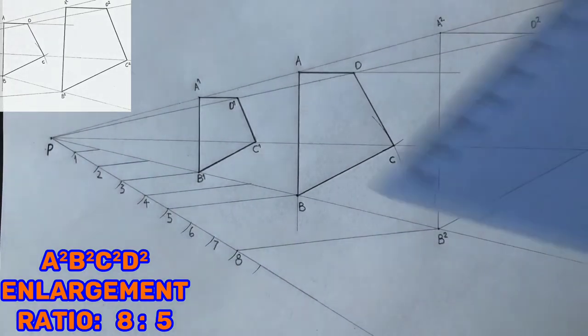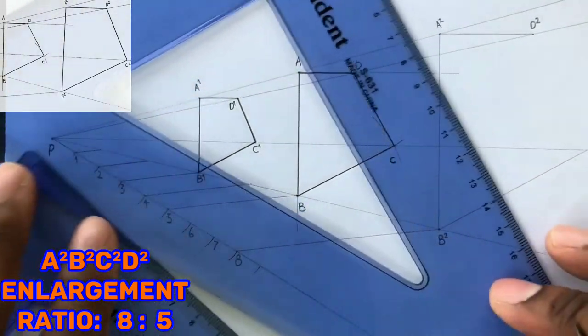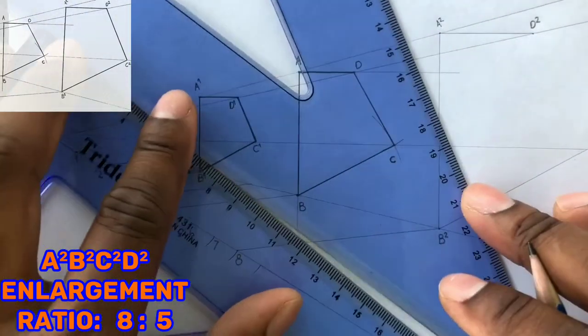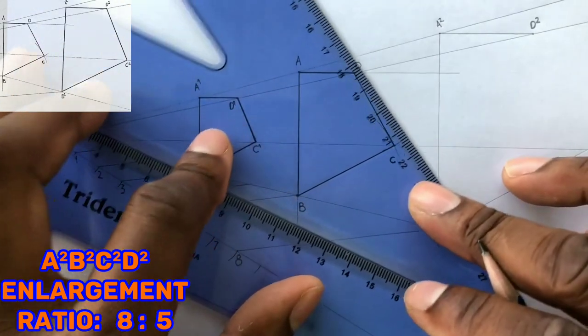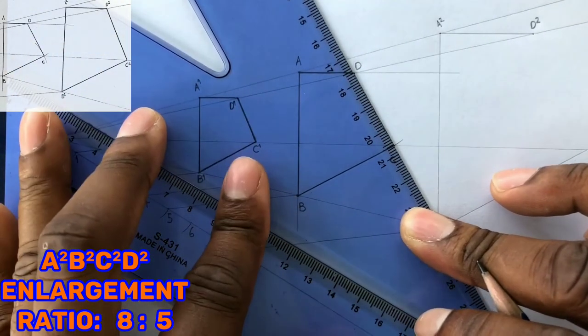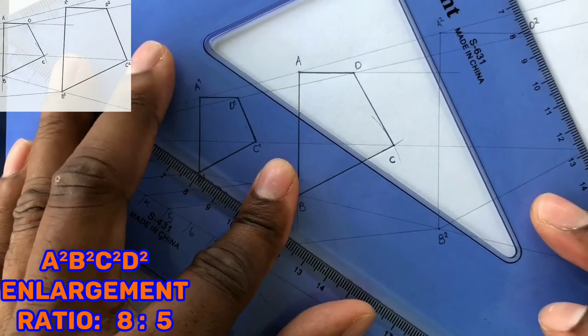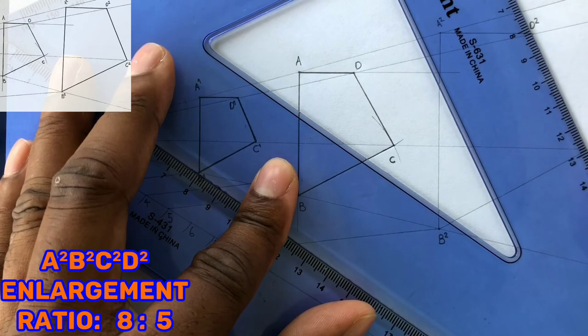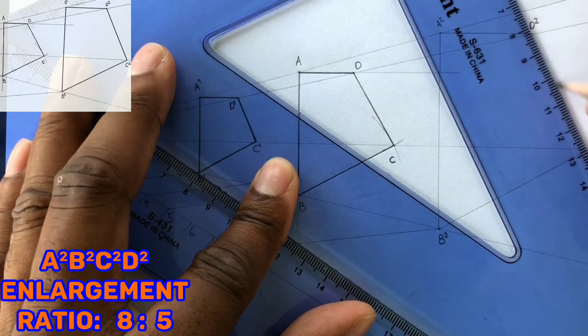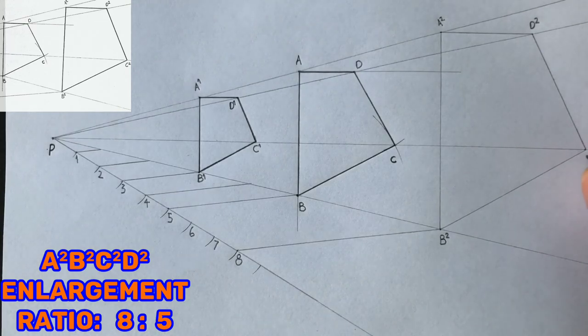From D2, you will now draw a line that is parallel to line DC. Now identify and label this latest intersection as C2.